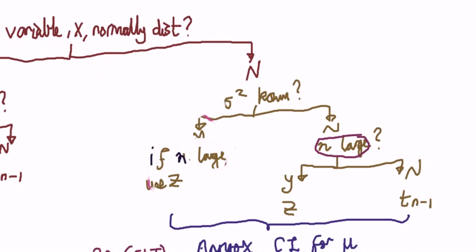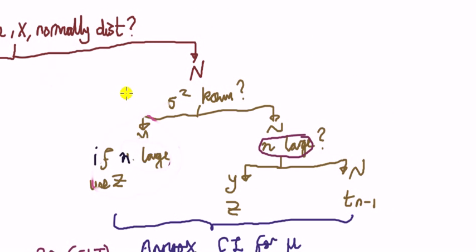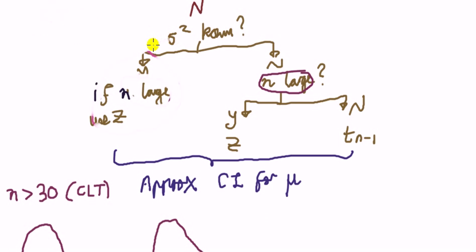Right. Let's go over to the other side. Say that my original data, my original variable is not normally distributed. Again, we ask the question, is the population variance known? If the answer is yes, then if n is large, we use the z table.